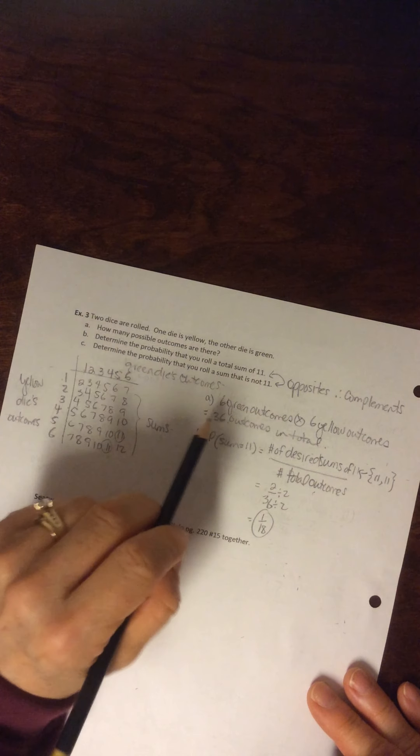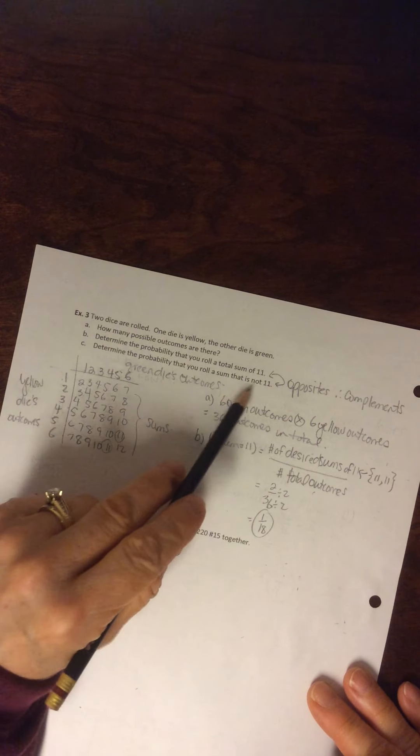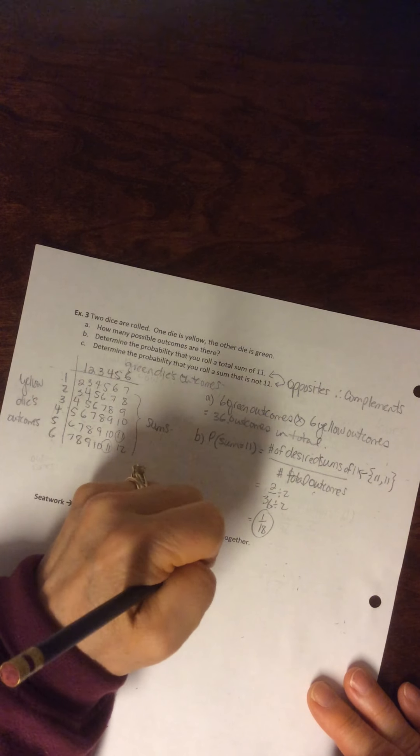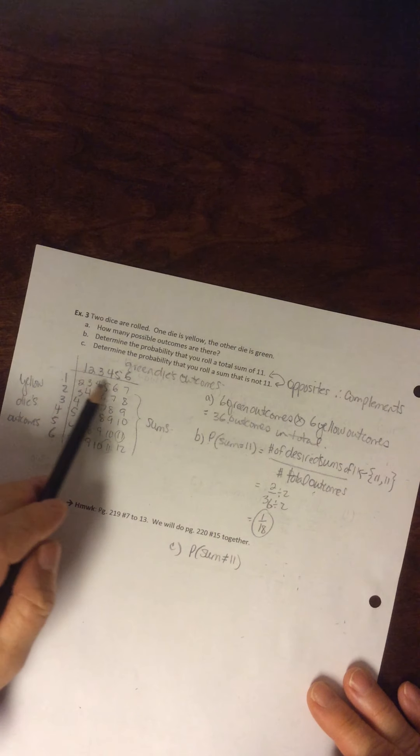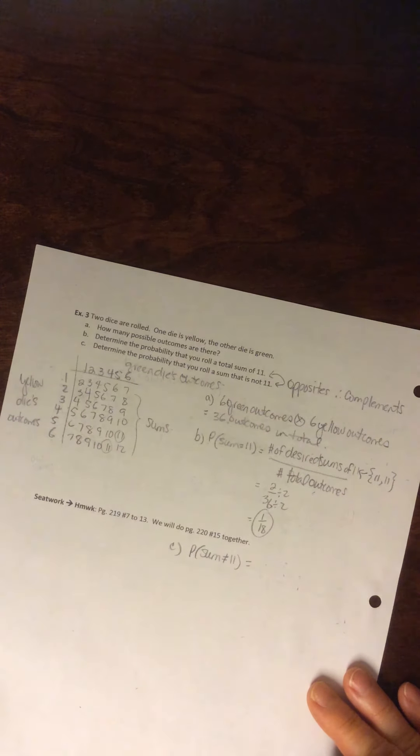B now, it asks, what's the probability that the sum is not 11? So the probability that the sum is not 11. Well, you can simply add all of these up, right? You can count them, and you can say, oh, looks like I've got 34.